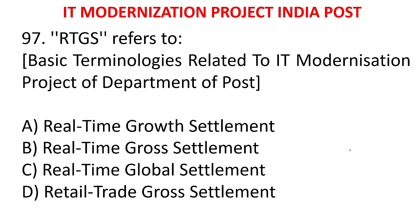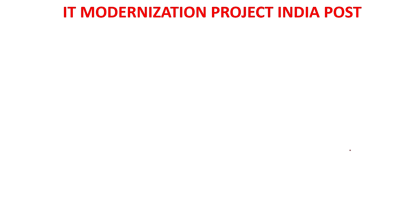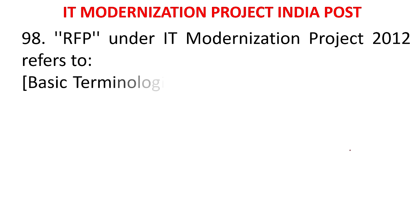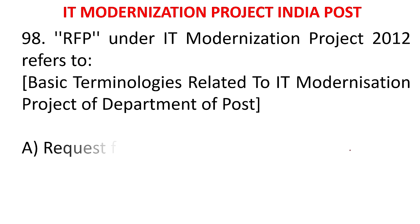MCQ 93: RTGS refers to - A) Real-Time Growth Settlement, B) Real-Time Gross Settlement, C) Real-Time Global Settlement, D) Retail Trade Gross Settlement. The answer is Real-Time Gross Settlement.